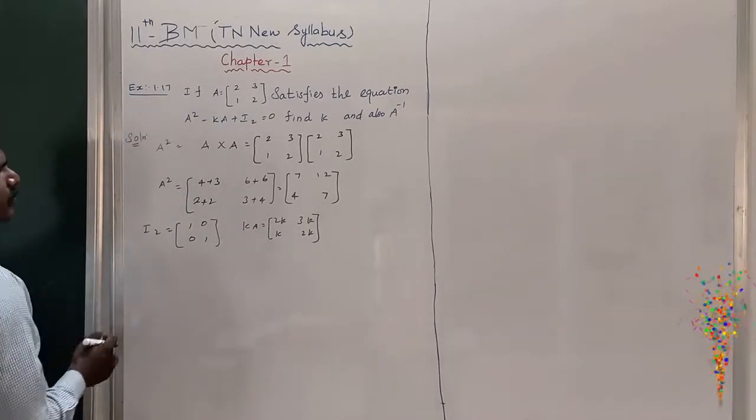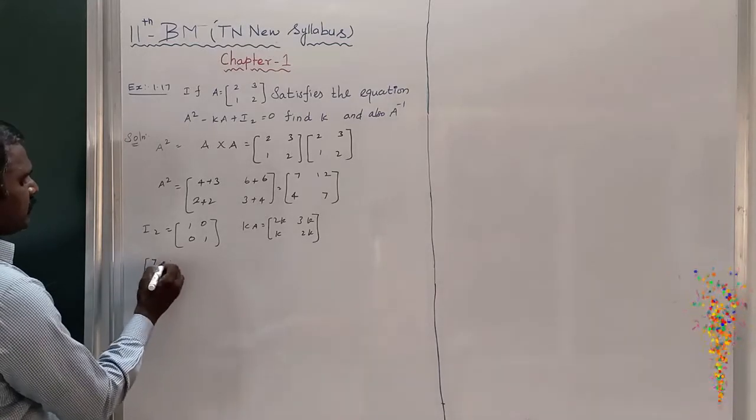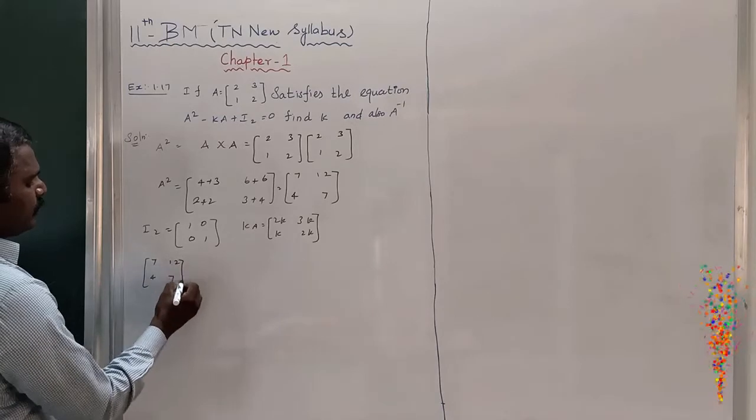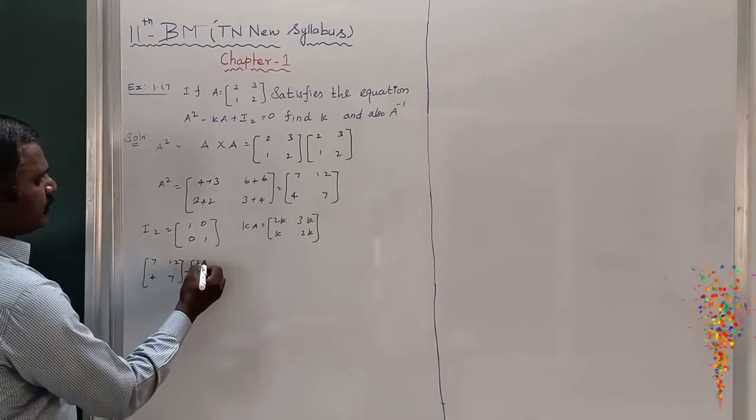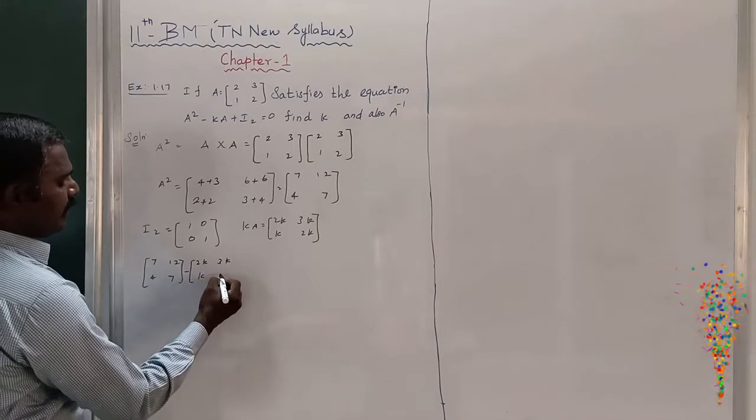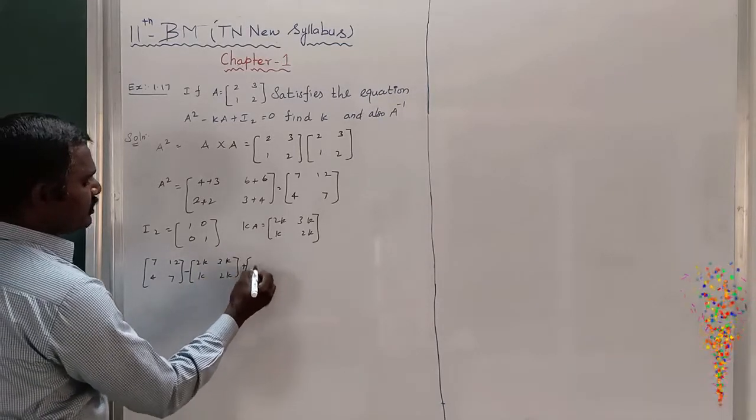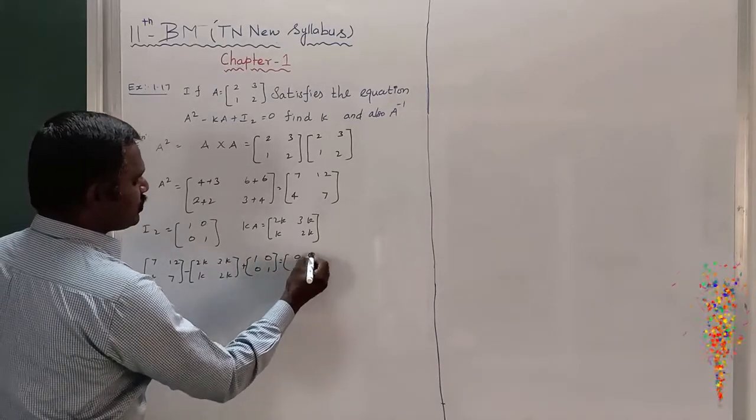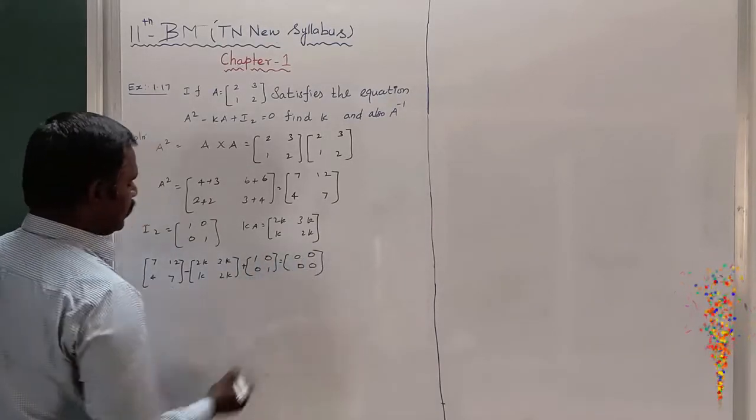Now we have to substitute from here. A² is [[7,12],[4,7]] minus KA [[2K,3K],[K,2K]] plus I2 [[1,0],[0,1]]. This is equal to 0 matrix [[0,0],[0,0]].